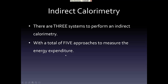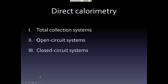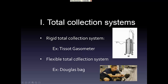Indirect Calorimetry has three systems and five approaches. The three systems are total collection system, open circuit, and closed circuit. For the total collection system, there are two approaches: the rigid collection system and the flexible collection system, and there are pictures illustrating these approaches.